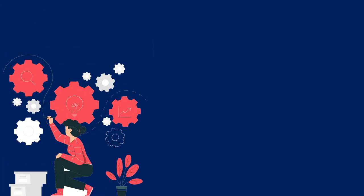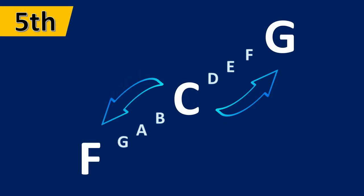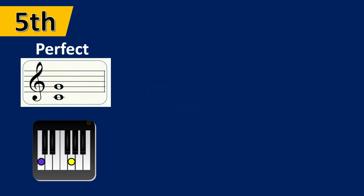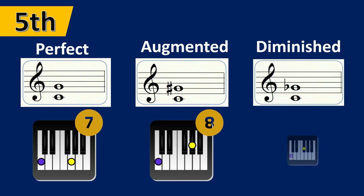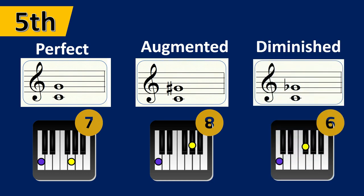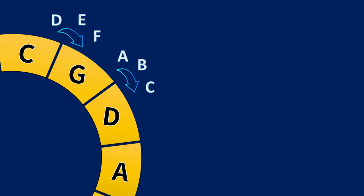How does the circle of fifths work? A fifth is the distance between five consecutive notes. There are three types of fifths depending on the number of semitones: perfect fifth — seven semitones; augmented fifth — eight semitones; and diminished fifth — six semitones. In the circle of fifths, all the keys are separated by perfect fifths, that distance of seven semitones. For instance, moving a perfect fifth up from C we get to G — seven semitones. Moving a perfect fifth down from C we get to F — seven semitones counting down.